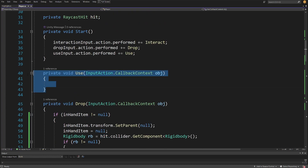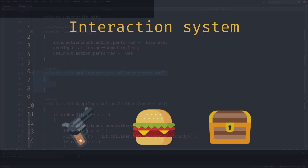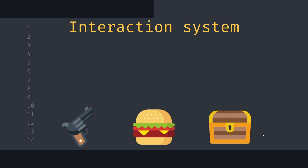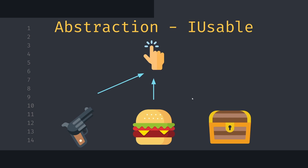Right now I want to show you how to create this use logic using a more object-oriented mindset. Currently in our project we have three objects: a weapon and a food item are both interactable and usable, while the chest is just interactable. We want to abstract the concept of a usable item and create an IUsable component. Our gun and burger will implement this abstraction, while our chest will not.